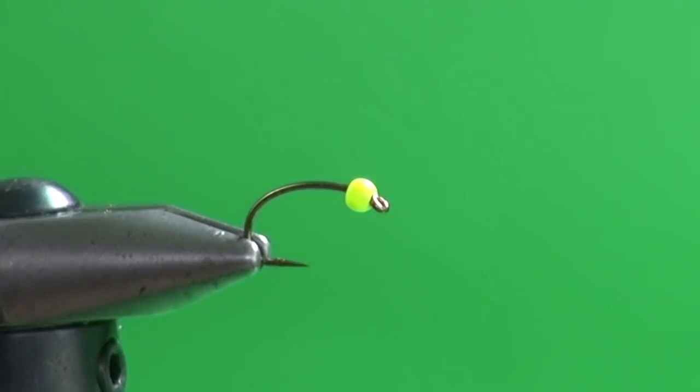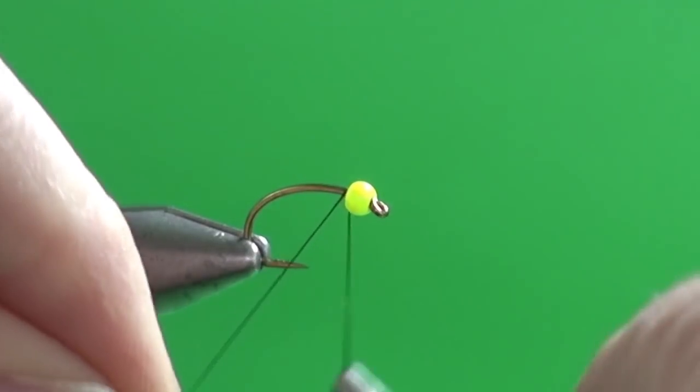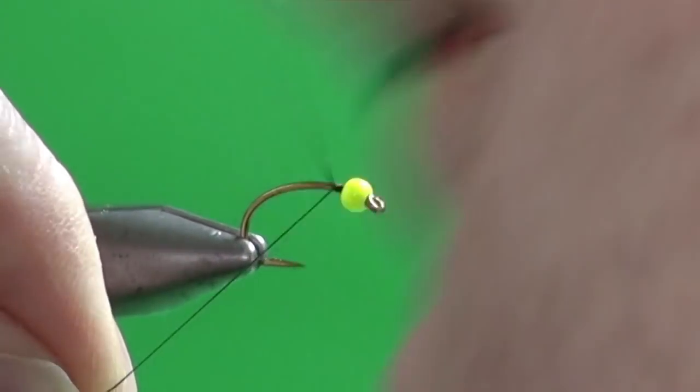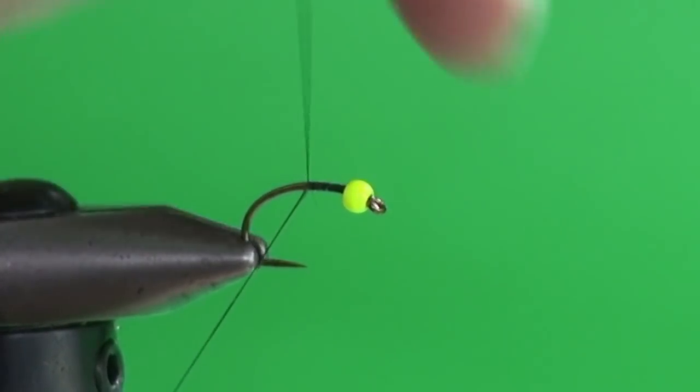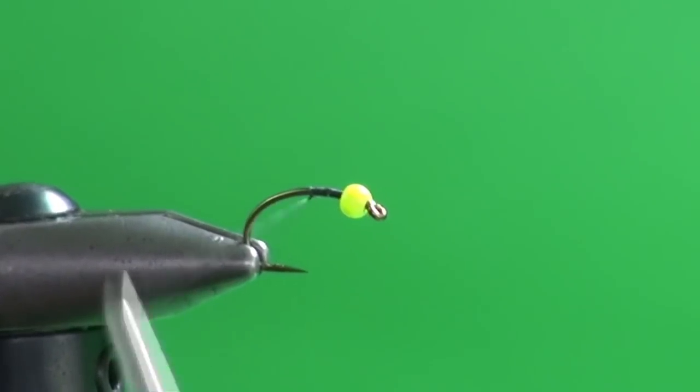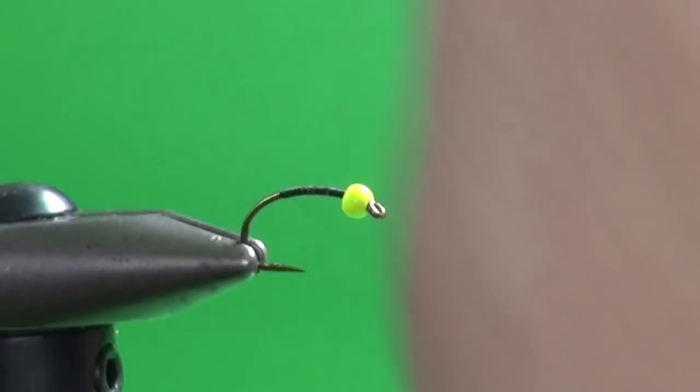So we're just going to attach our tying thread which is black 70 denier or 8-0, and we're just going to get that started. I'm going to pull down on the thread and snap that thread forward to break it off, and then carry on down the shank into the bend slightly.